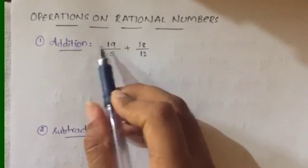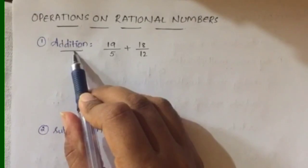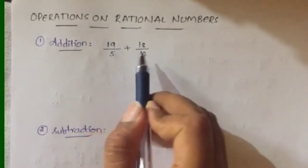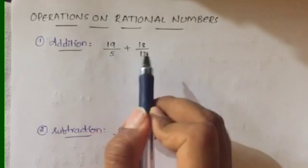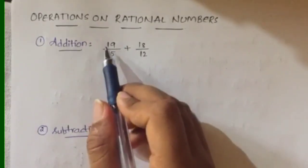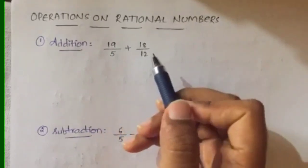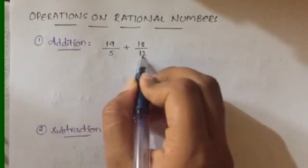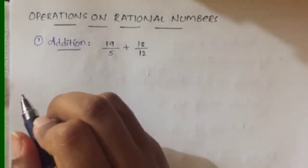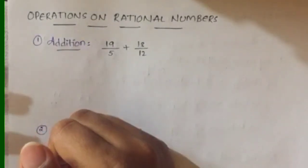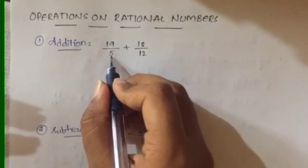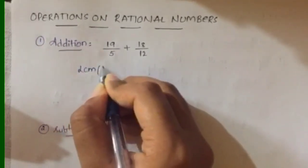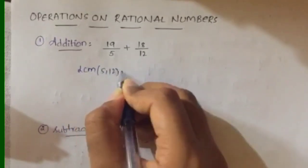First, going on to addition. In order to add two rational numbers, you have to first make the denominators equal, and then you add the numerators. In order to make the denominators equal, as I already told you in the previous video on comparison of rational numbers, you have to take the LCM of the denominators first.